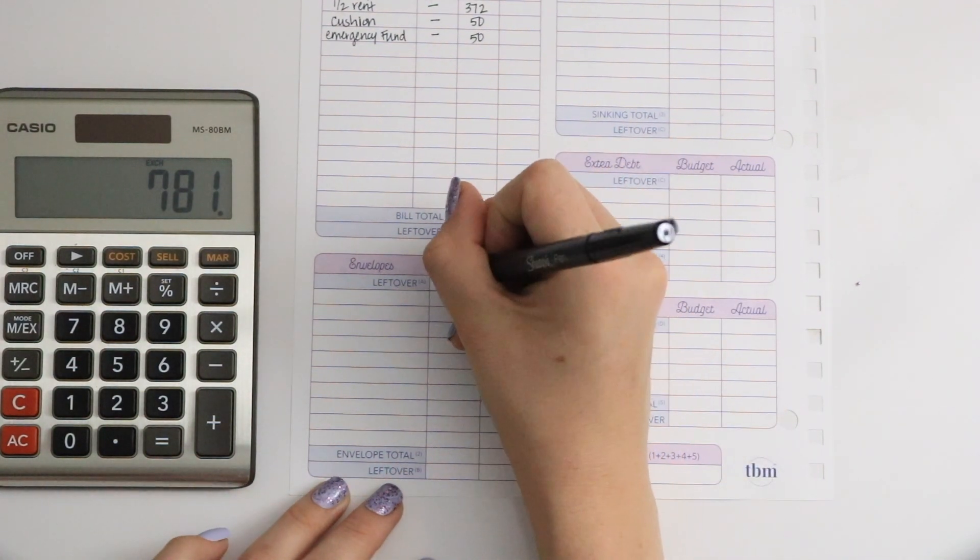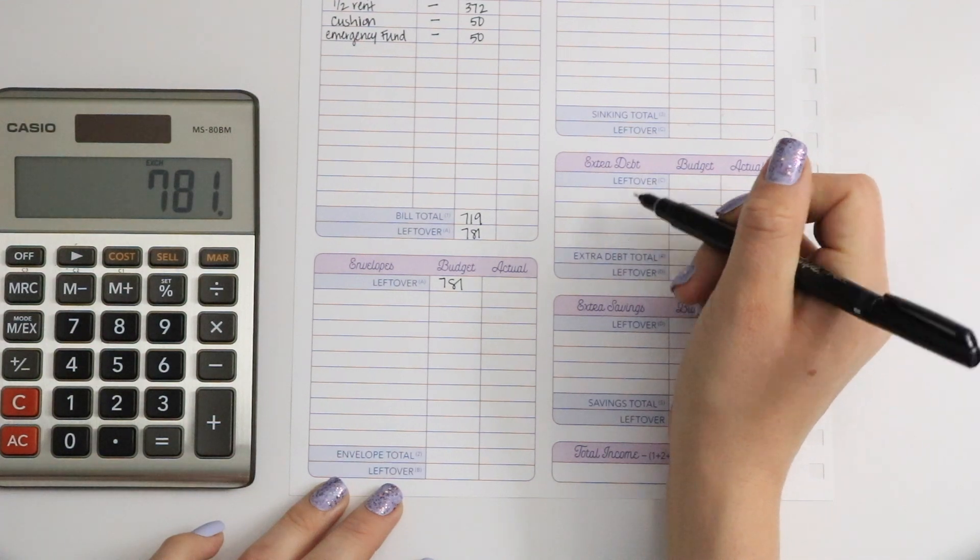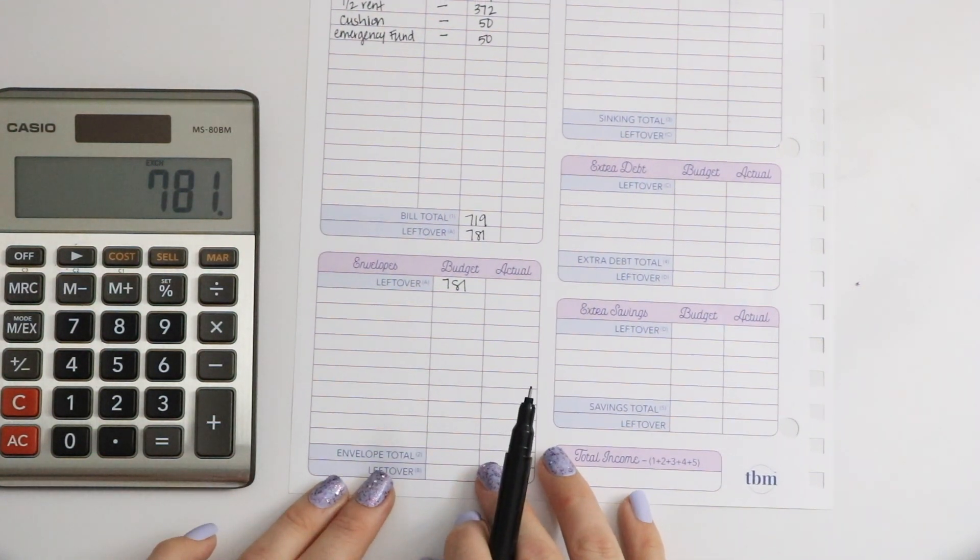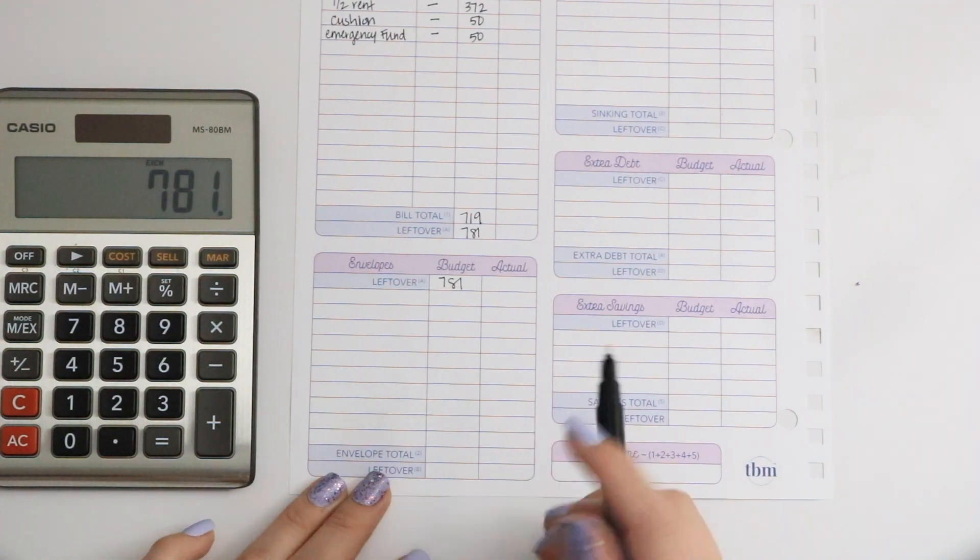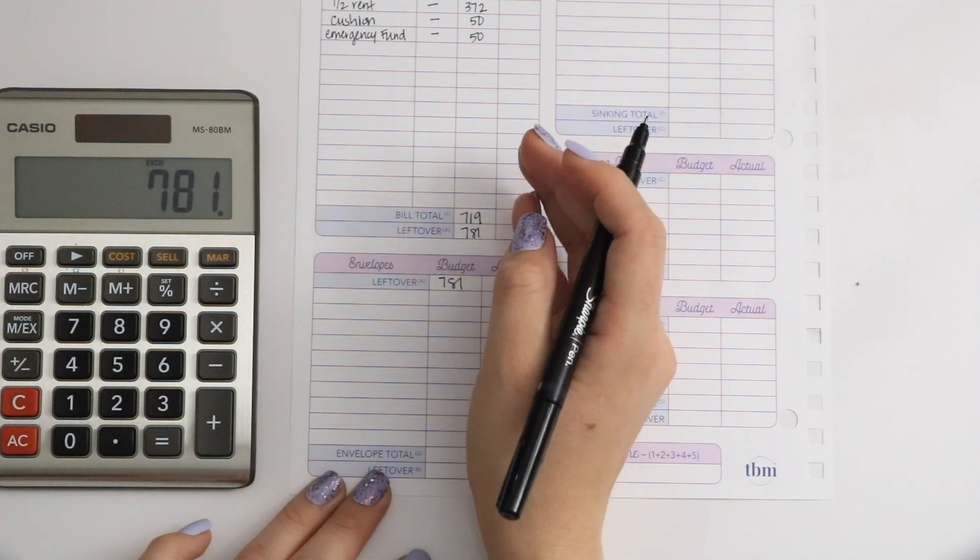That will be split in between my envelopes, extra debt, and sinking funds. Let's start off with our envelopes. These categories haven't changed since I first started.